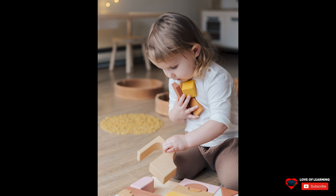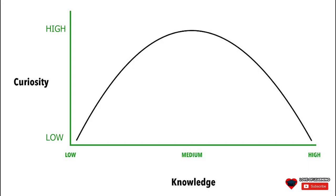One factor limiting our understanding of it is the lack of a widely agreed upon delineation of what is and is not curiosity. If we examine how our level of curiosity in a particular topic is affected by our existing knowledge in that subject, we would find a function that looks like an inverted letter U.